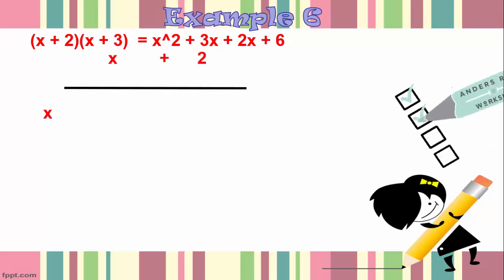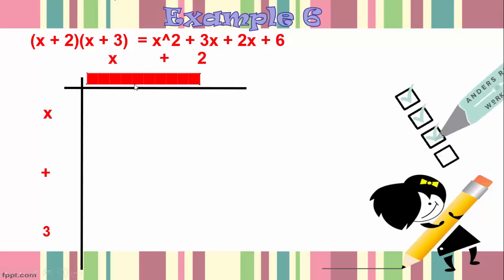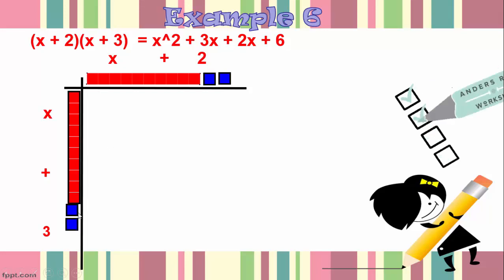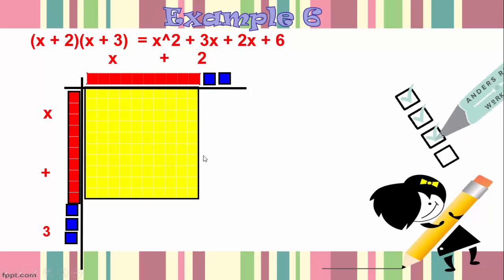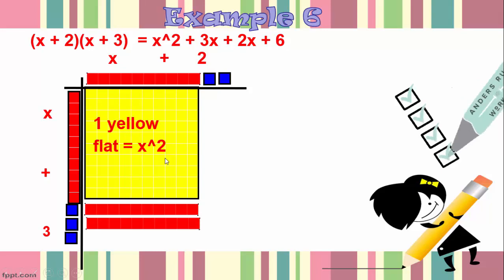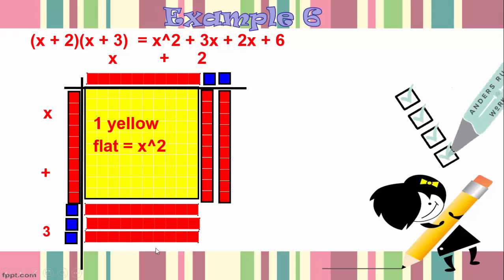So I set up my table and here I have my x plus 2 and my x plus 3, and now I'm going to fill in the area with a flat which represents x squared, 3 red rods here, 2 red rods here for a total of 5 red rods which represent 5x.